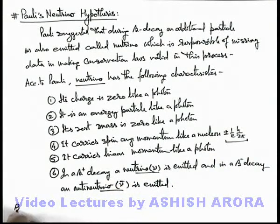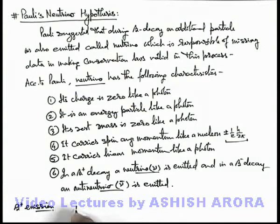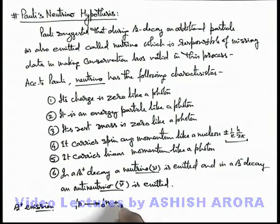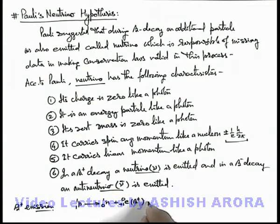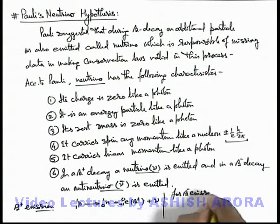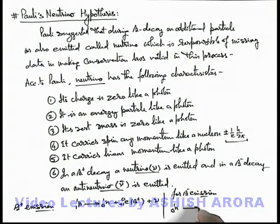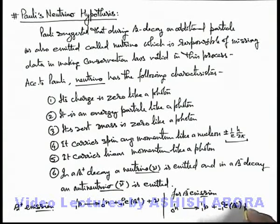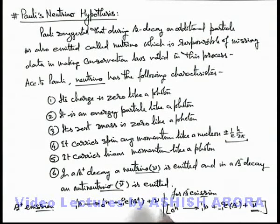For beta plus emission as well as for K-capture, the reaction is written as: 1p1 gives a neutron plus a positron (1e0), which is the beta plus emission, and it is accompanied by the emission of a neutrino. Similarly for beta minus emission, the reaction is: a neutron (0n1) transforms into a proton, and a beta minus particle (−1e0) is emitted, and this emission is accompanied by the emission of an anti-neutrino.